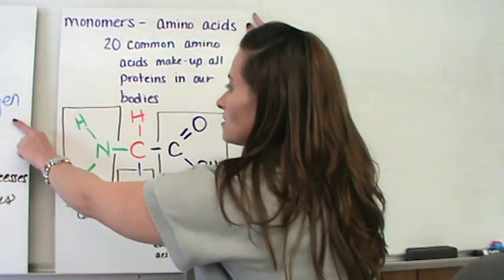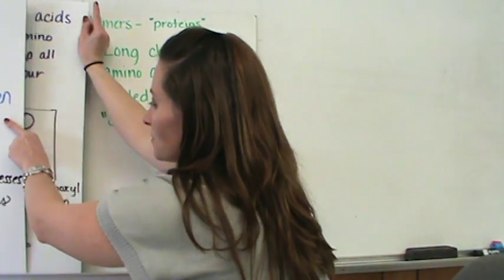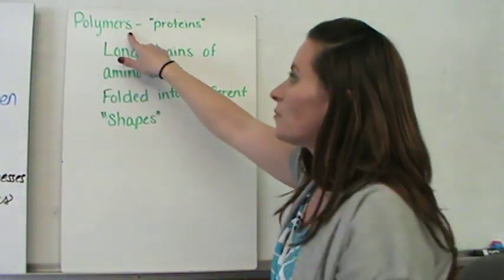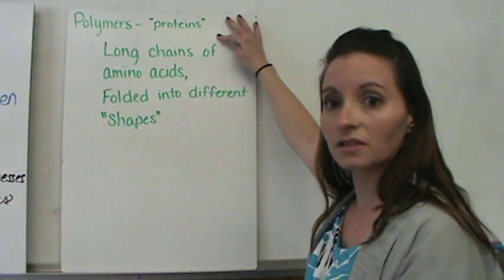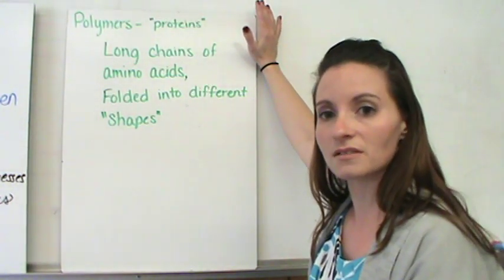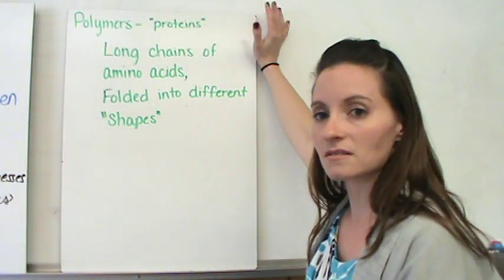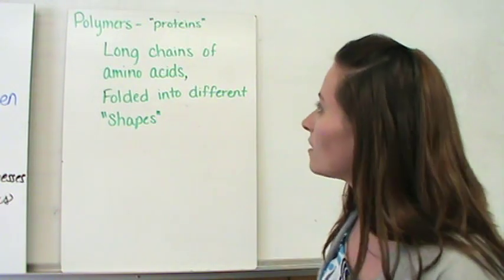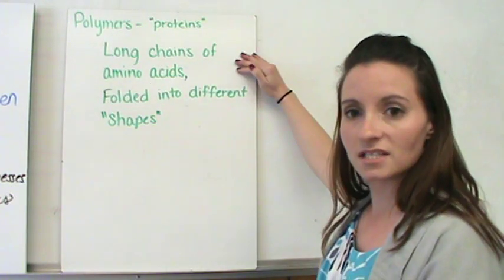Now, the monomers are known as amino acids, and the polymers are just specifically known as proteins. Proteins are the polymers made up of amino acids. There's no special name for them. Now, these are the long chains of amino acids.